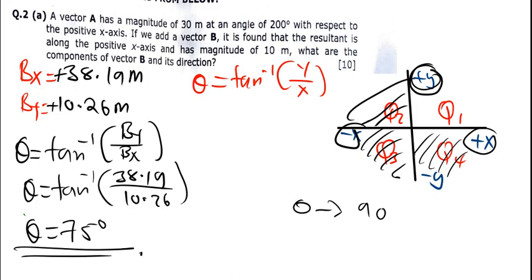So the x and y components we found are 38.19 meters and 10.26 meters respectively. The direction is 75 degrees above the positive x-axis, or 75 degrees with respect to the positive x-axis.